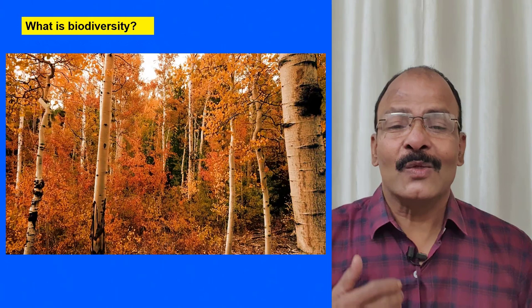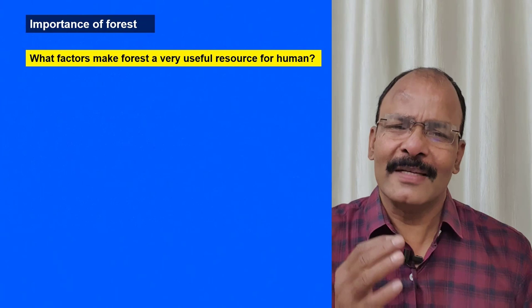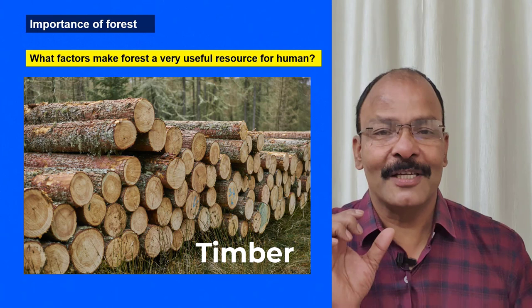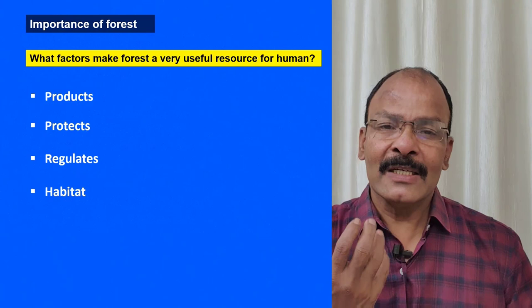Every place has an ecosystem, and the variety across all of these is referred to as biodiversity. The question is: what factors make forest a useful resource for humans? First, forest gives us plenty of products — especially timber, which is the wood used by industries for making furniture, paper, or sports goods. It also gives us gum, resins, flowers, fruits, and medicinal herbs.